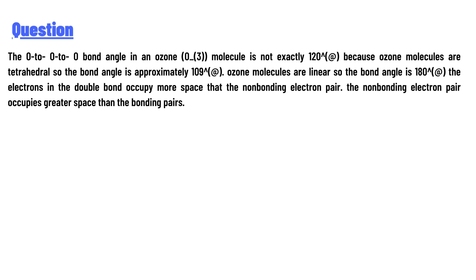molecule. Why is it not exactly 120 degrees? Is it because: (A) ozone molecules are tetrahedral so the bond angle is approximately 109°, (B) ozone molecules are linear so the bond angle is 180°, (C) electrons in the double bond occupy more space than the non-bonding electron pair, or (D) the non-bonding electron pair occupies greater space than the bonding pairs?